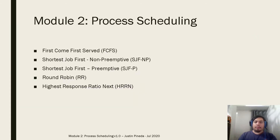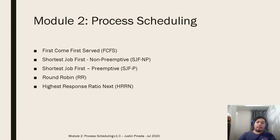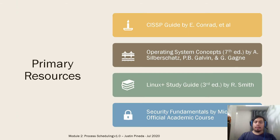For this module, we'll be discussing different algorithms for process scheduling: First Come First Serve, Shortest Job First Non-Preemptive, Shortest Job First Preemptive, Round Robin, and Highest Response Ratio Next. These are our primary resources — copies of e-books and other reading materials are uploaded in the Google Drive.